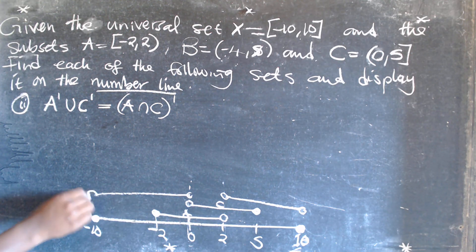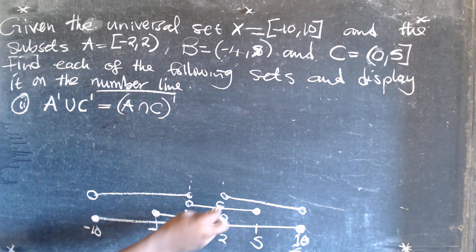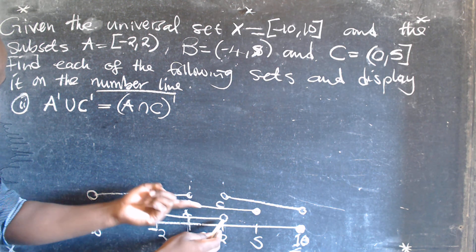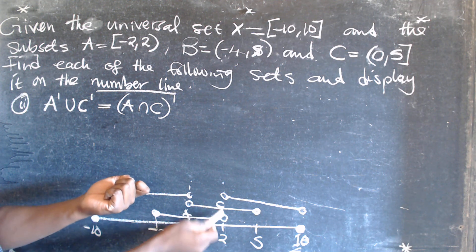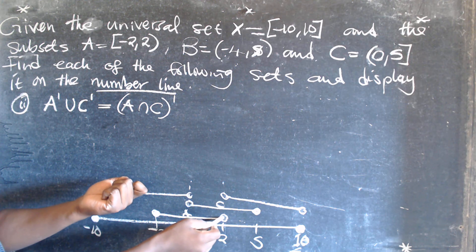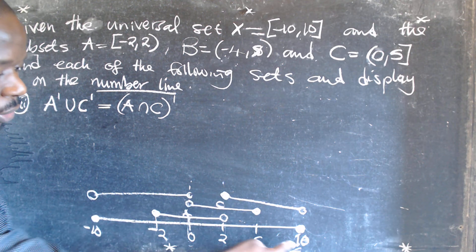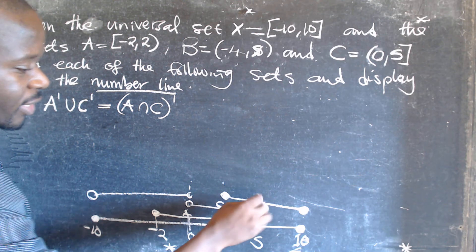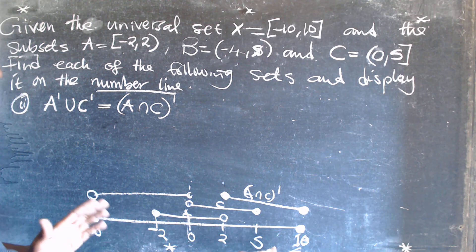We're talking about the elements from this point to this side and from this point to the other side. Looking at the shading: this 2 is not in set A but it is in set C, which means it is not in the intersection. If it is not in the intersection, it is in the complement — it's outside. That's why we shade from negative 10, which is not in the intersection, to this boundary. This is A intersection C complement.